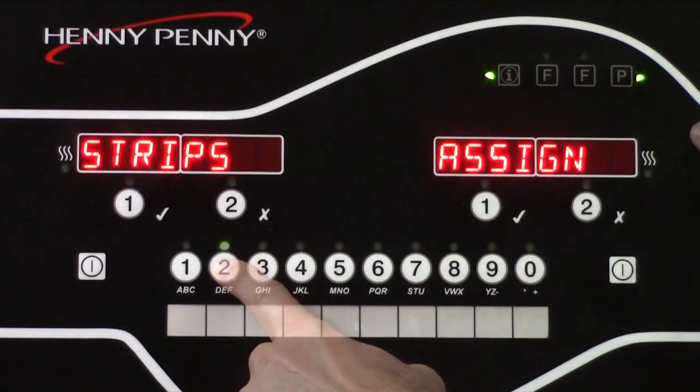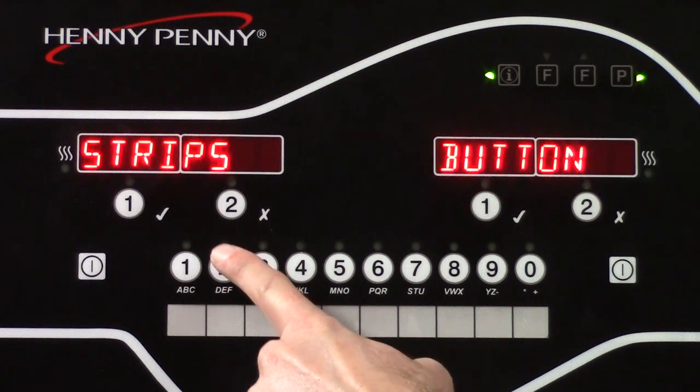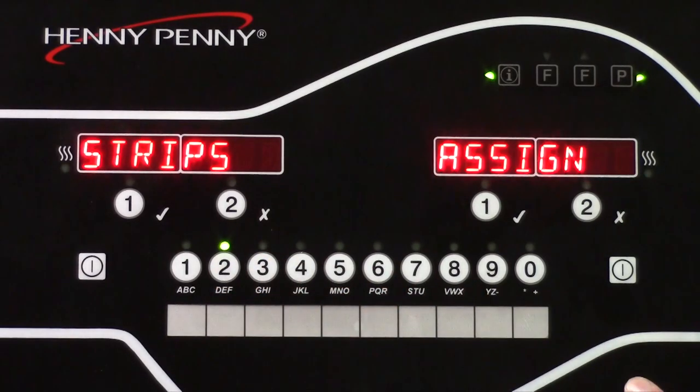Next, we're going to assign a button. For this example, we said that we are going to program strips to button number 2. So all we're going to do is press and hold button number 2 and then the light is lit above button number 2. Once that light is lit, that tells us that now strips is programmed to button number 2.